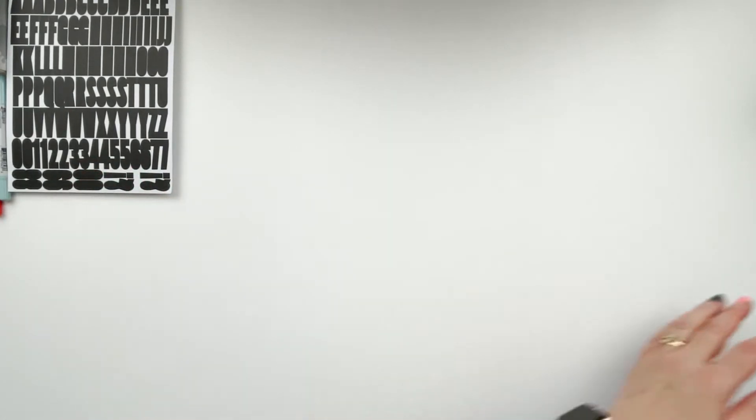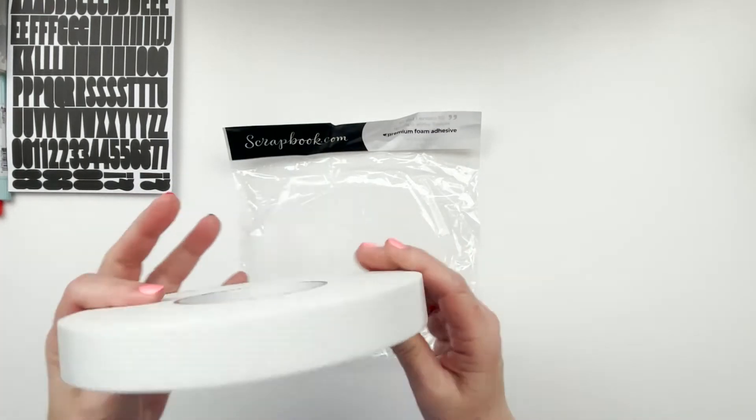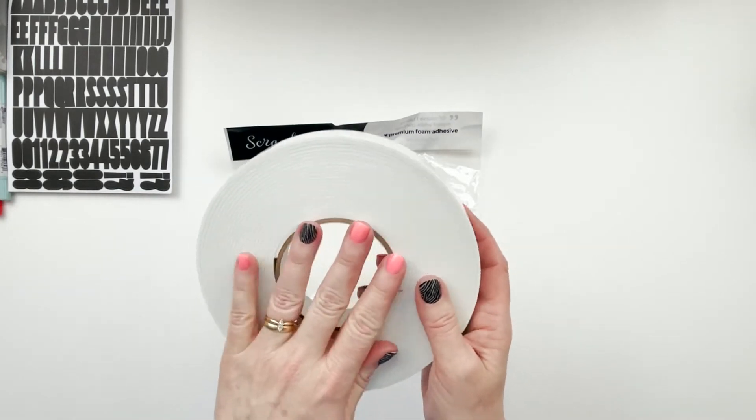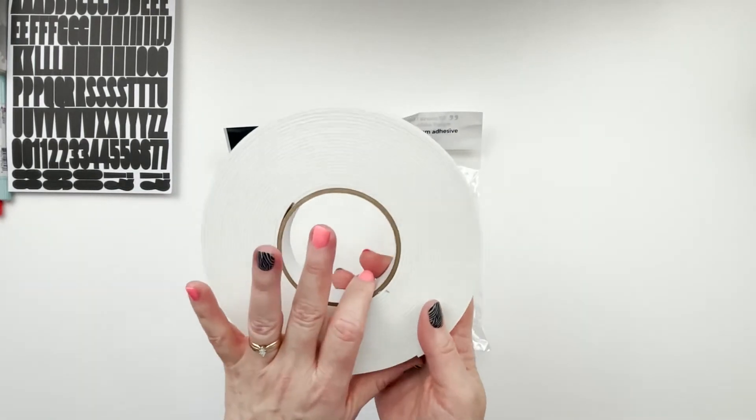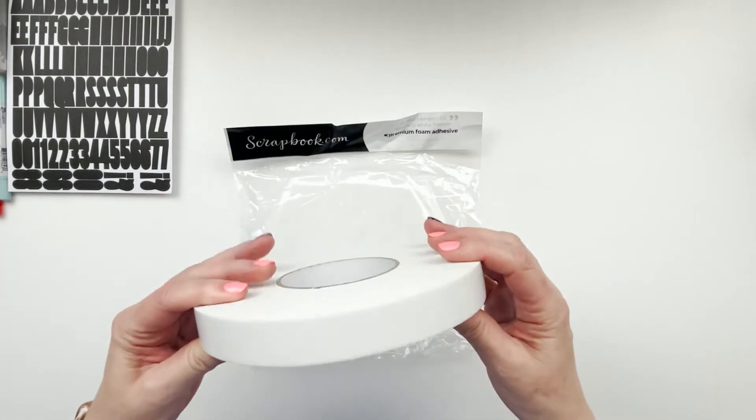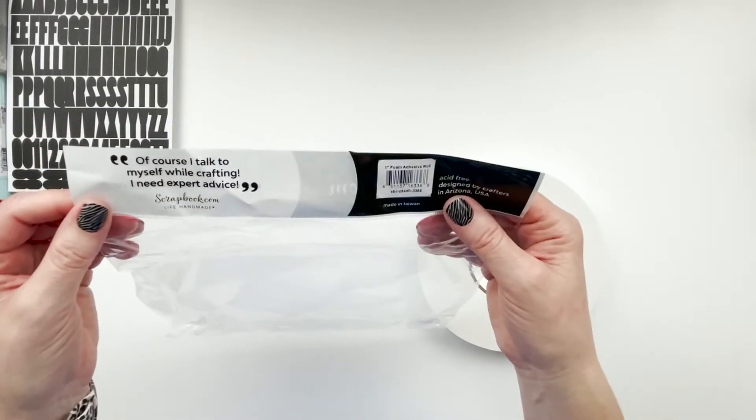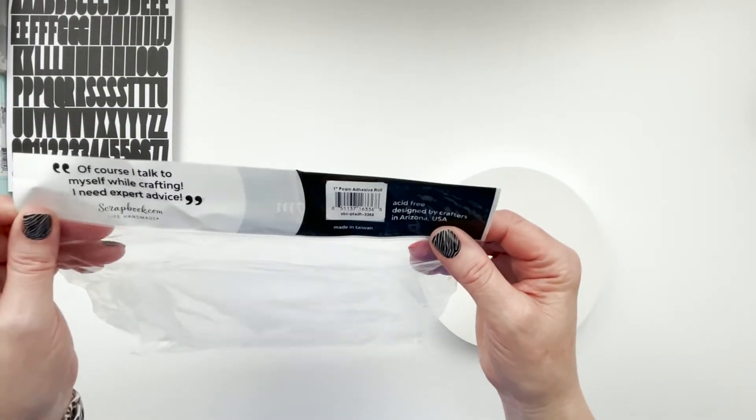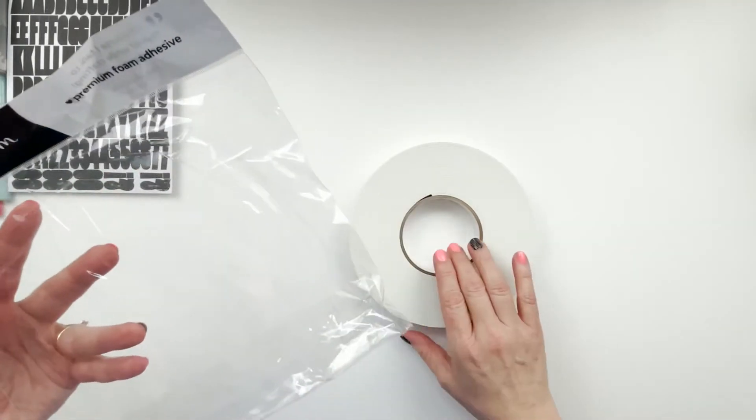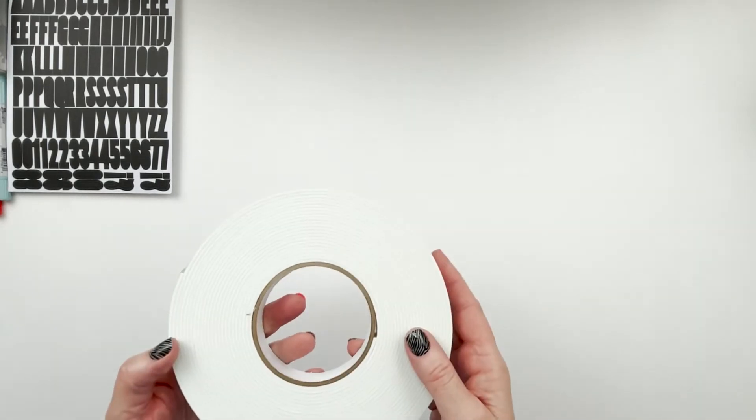Then I have the scrapbook.com roll adhesive. I love this foam to put behind like larger pictures, again especially if I'm doing a 12 by 12 and I want to pop up my picture. I like the thickness of it, the width and the thickness. It is, I don't remember what the measurement is, I know it's one inch across, but I can't remember what the thickness is. But I love this, it's my favorite foam adhesive on a roll.